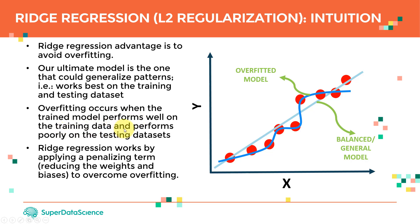The overall idea of regularization is that we try to reduce the variance or variability between the two datasets by increasing the bias a little bit. The idea is that we want the model to perform maybe a little worse during training, but for the greater good — the model becomes more general, doing well during both training and testing.